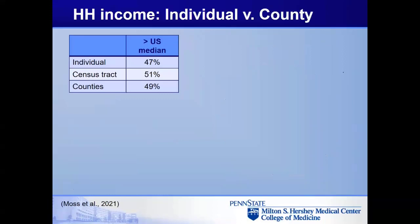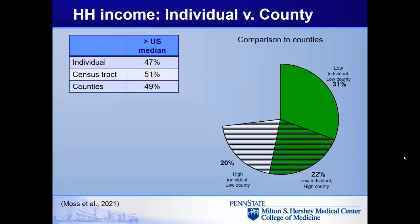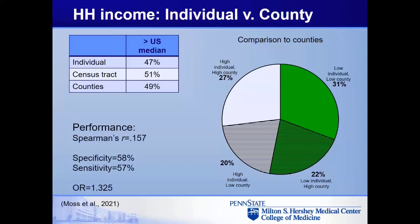We can do the same thing for individuals compared to counties. We see similar sorts of estimates: about 31% are low income in low-income counties, 22%, 20% in mixed categories, and 27% have high income and live in a high-income county. County-level income is even poorer at predicting individual-level income — the correlation is .17, specificity and sensitivity are below 60%, and the odds ratio is just 1.3.